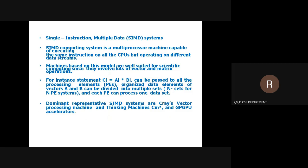Single Instruction Multiple Data: as the name shows, there is a single instruction but multiple data will be given. This is a multi-processor machine capable of executing the same instruction on each CPU but operating on a different data stream. For example, C = A multiplied by B can be passed with different sets of data. The best examples are CRAY vector processing machines.